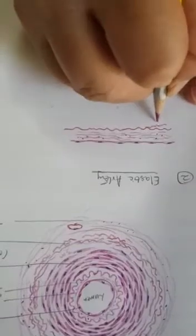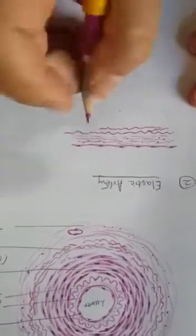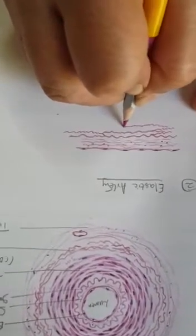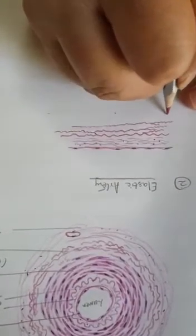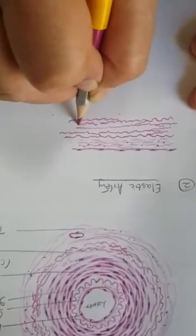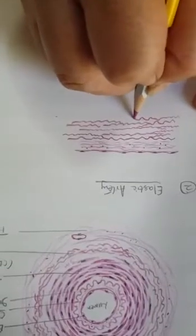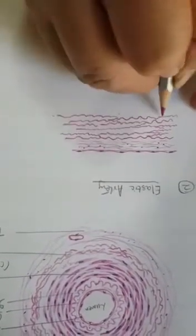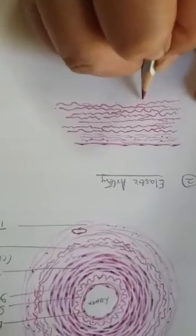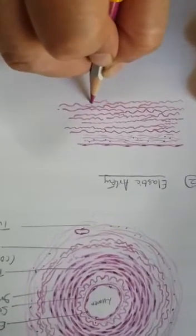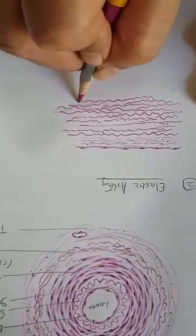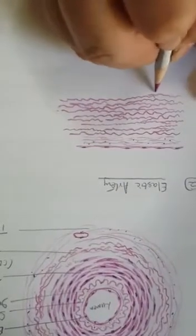Elongated here like this. Almost 40 to 70 elastic laminae are there in the tunica media. You will draw wavy fibers here, just draw them, and usually they are fenestrated elastic laminae. So make this tunica media thick here.